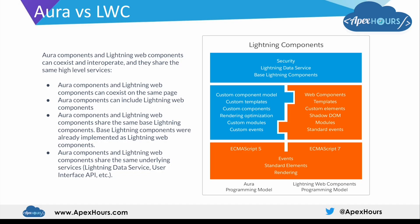If you are already developing lightning components with the Aura programming model, you can continue to do so - your Aura components will continue to work. You can build new components with Aura or Lightning Web Component; it is completely up to you. They can coexist and talk to each other, passing data, sharing events, and more. Over time you can consider migrating your Aura components to Lightning Web Components, starting with those that would benefit most from the performance improvements. If you are new to developing on Lightning or starting a new project, we recommend using the Lightning Web Component programming model because of its additional benefits over Aura. But if you already have Aura components and don't want to migrate, nobody is forcing you.